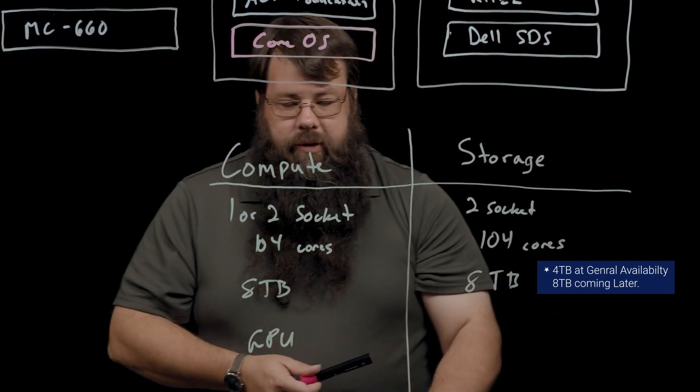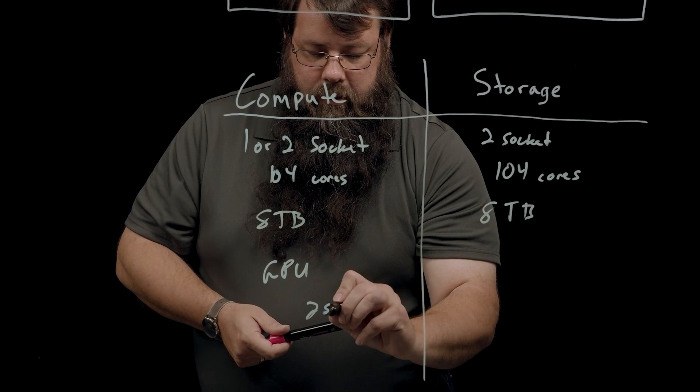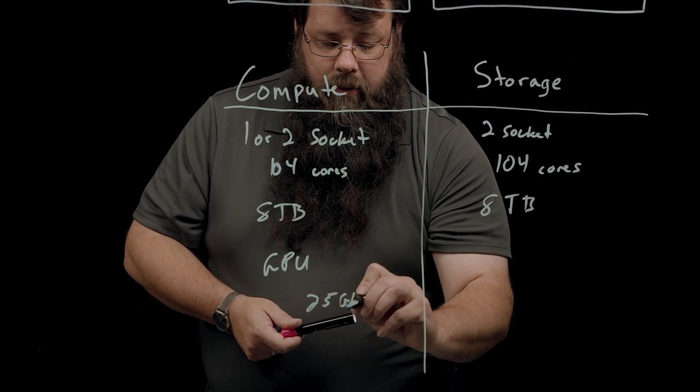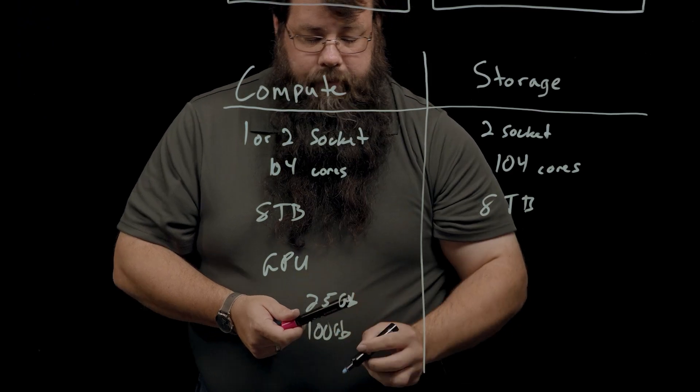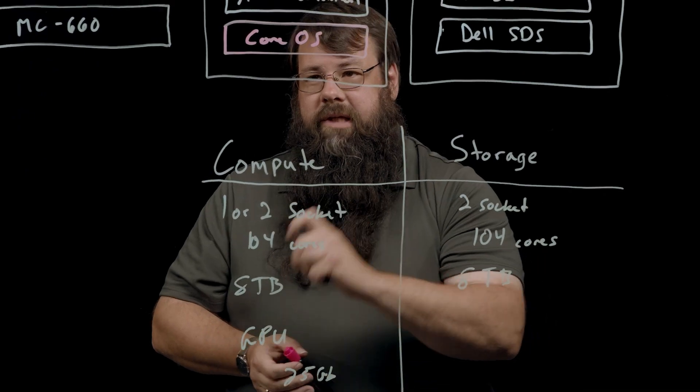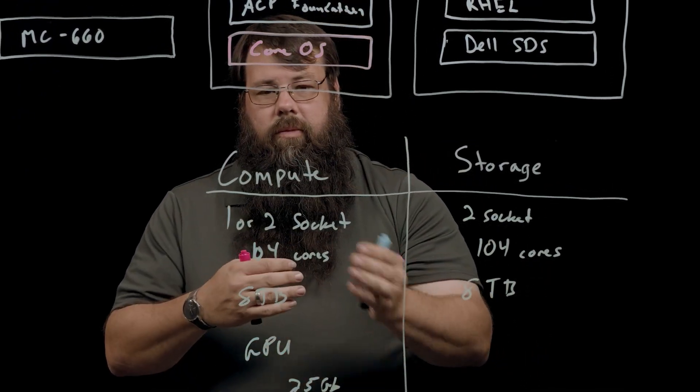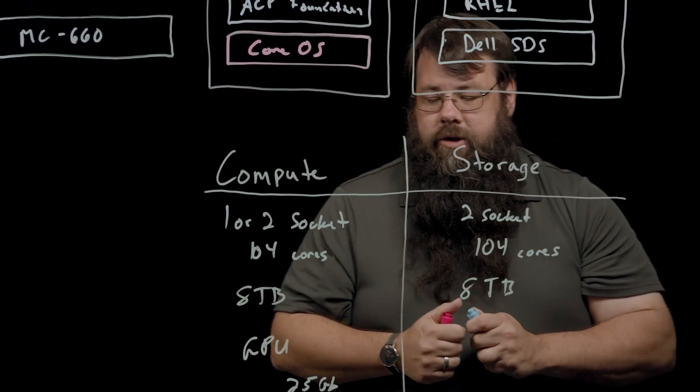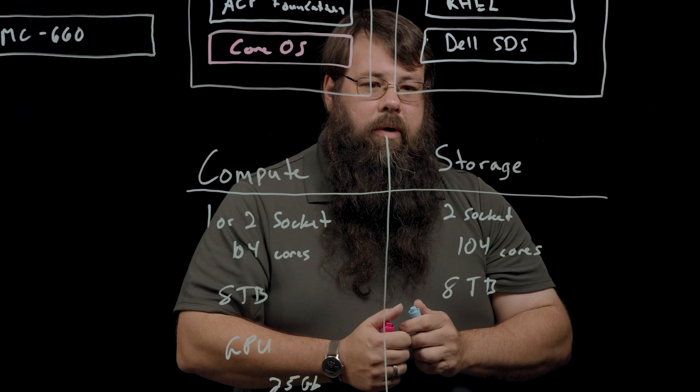Both node configurations have NIC options for 25 gigabit or 100 gigabit. If you need to connect to 10 gigabit switches, you can do that. The 25 gig NICs will auto negotiate down to 10, but we recommend the faster networking whenever possible.